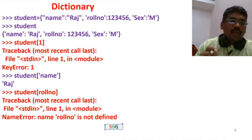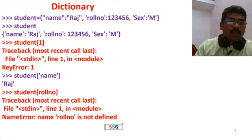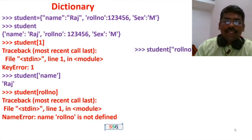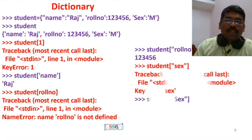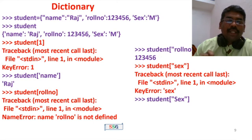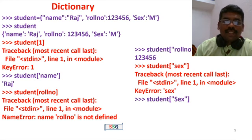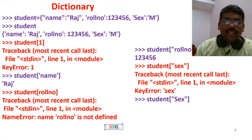Use single quotes or double quotes to specify the key as a string. For example: student['name'] with single quotes, or student["sex"] with double quotes. Be aware that key names are case-sensitive — capital 'X' and lowercase 'x' are different keys.